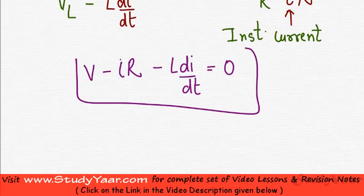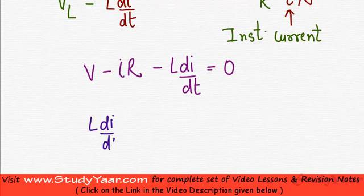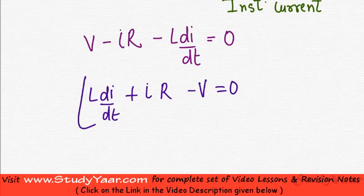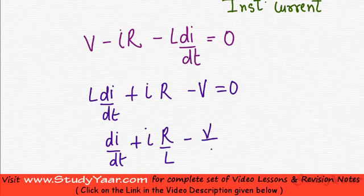I can write this equation like this also. I am just multiplying by minus 1, so what I am getting is L di by dt plus iR minus V equals 0. Now what I would like to do is divide by L throughout. I would get di by dt plus i into R by L minus V by L equals 0.